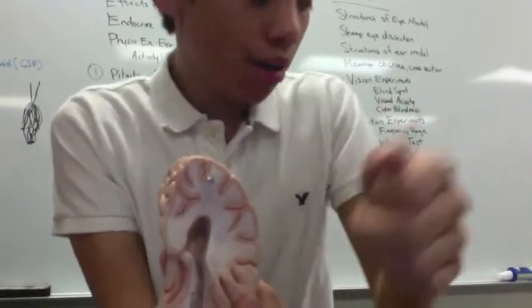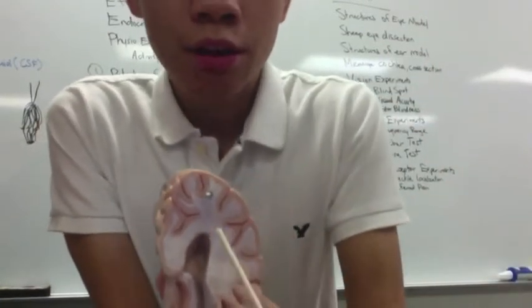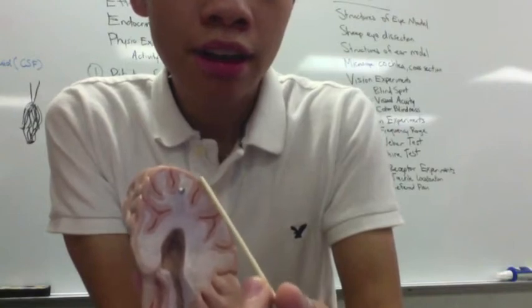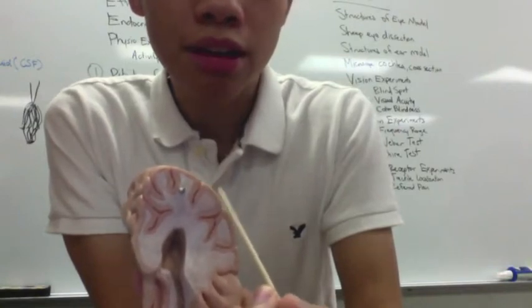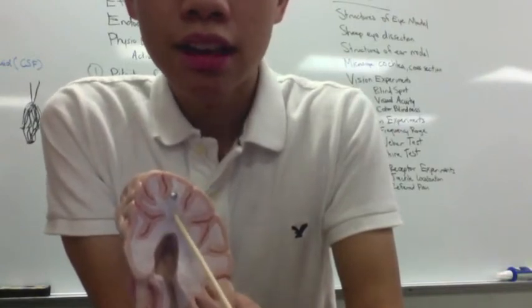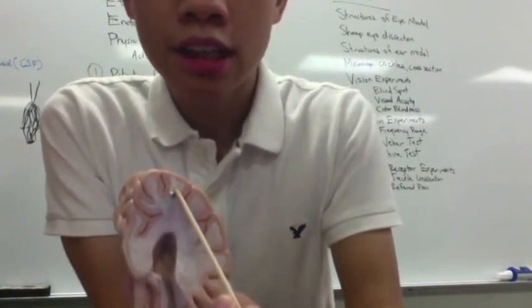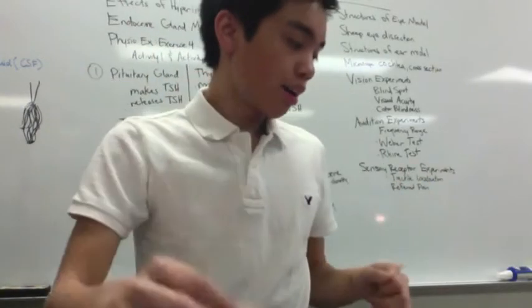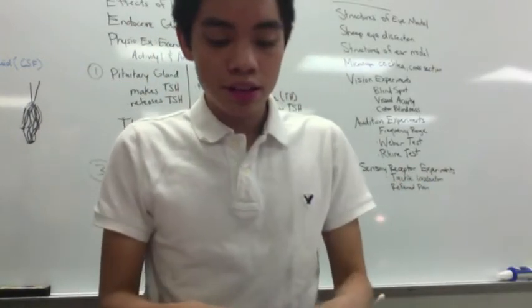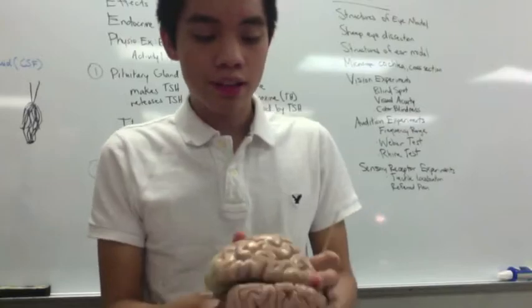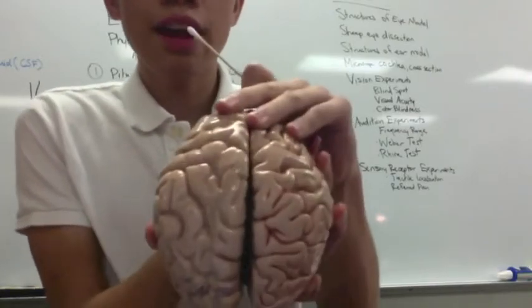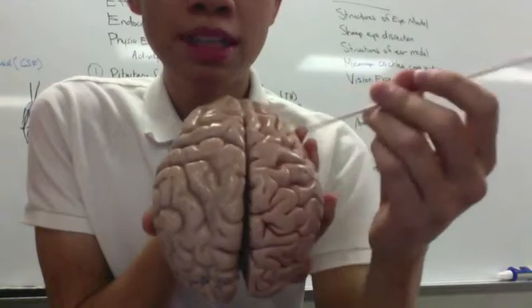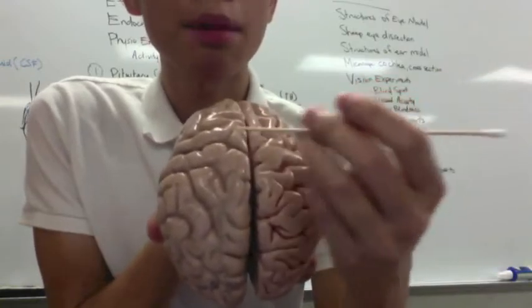You have your white matter and your gray matter. Gray matter is on the outer layer, and white matter is on the inner layer. You also have your longitudinal fissure, which separates the left and right hemispheres.